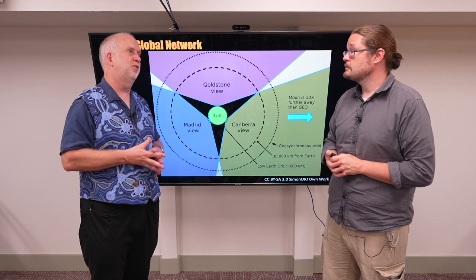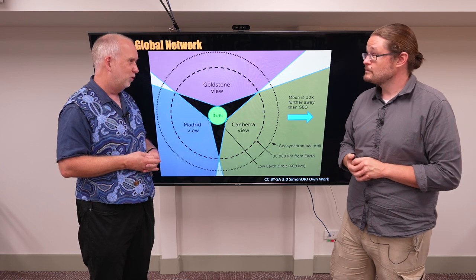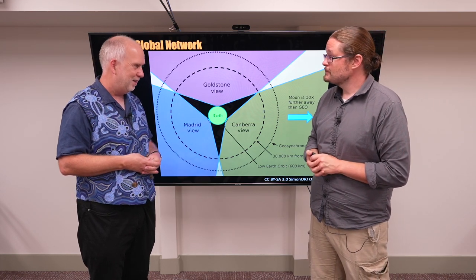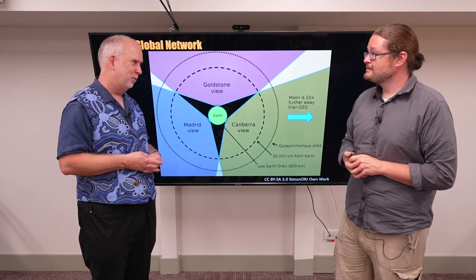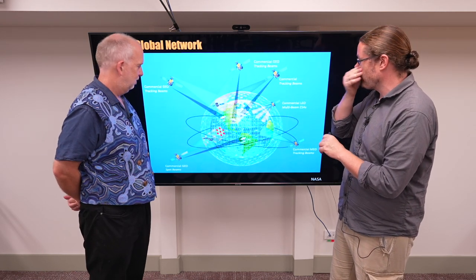And it also limits how rapidly you can respond. Let's say you suddenly decide you actually want to observe somewhere else because something interesting is happening there. You have to wait till your spacecraft comes around and tell it where to look for. And that's right. And so this is why people use these combinations of networks.